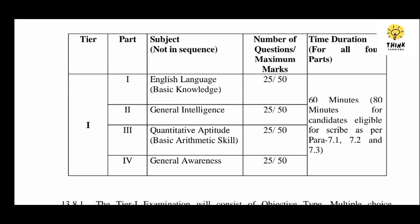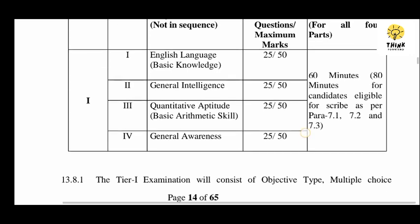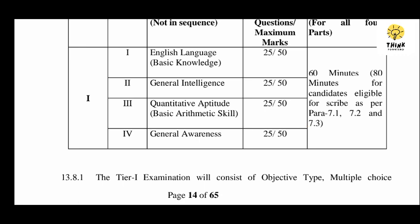This is a question of 100, about 200 marks. This covers English Language and Basic Knowledge — 25 marks, General Intelligence, Quantitative Aptitude covering Basic and Arithmetic Skills — 25 and 50 marks, and General Awareness.